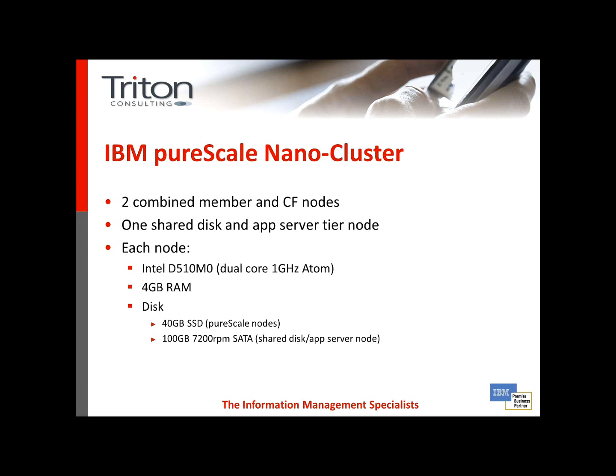We're going to be using the IBM PureScale nanocluster. This is a small demonstration footprint, not production ready, used to demonstrate the technology in use in PureScale. In this particular configuration, we have two combined member and CF nodes, one shared disk service on a third equivalent node. Each node is based on a dual core, one gigahertz Atom processor, similar to what you find in a netbook.